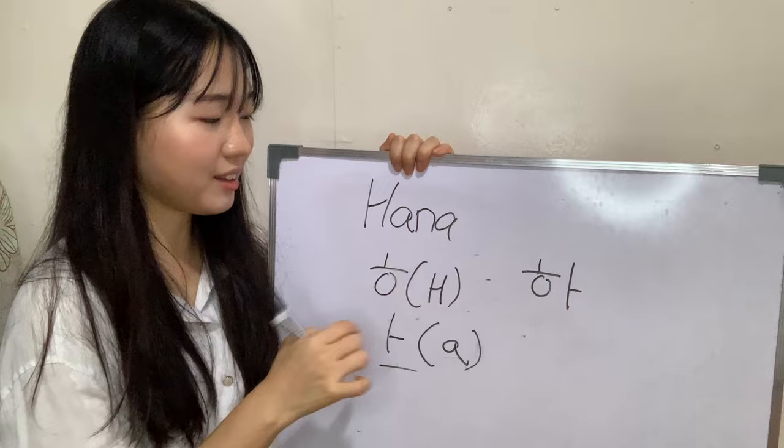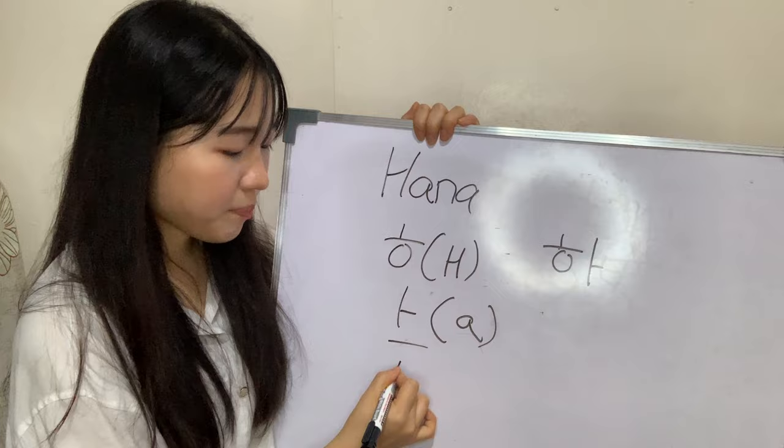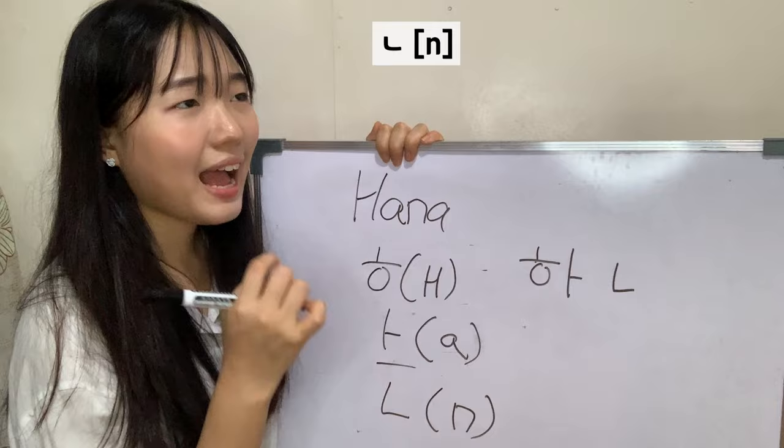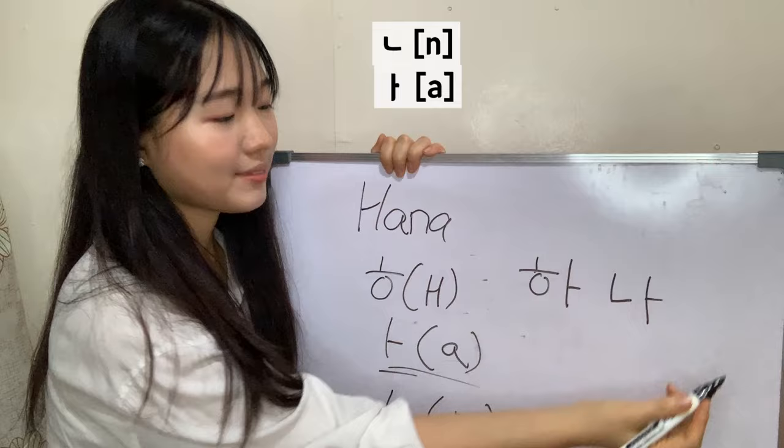How about 'Na'? When we listen, 'Na' sounds like N, so we're going to write N. And 'Na' also has an A sound, so we're going to use that vowel again. So combining them: Hannah. This is how I write my name, Hannah.